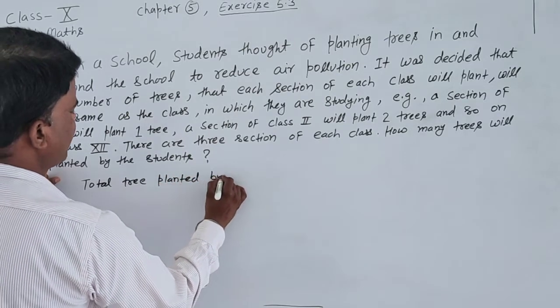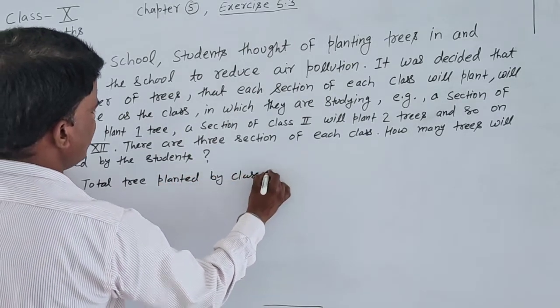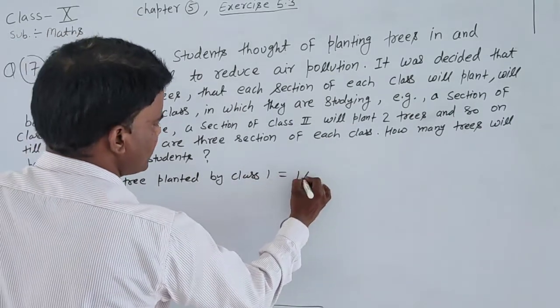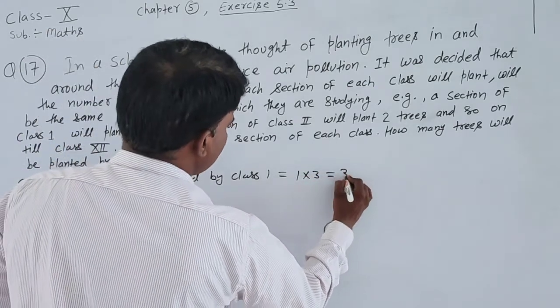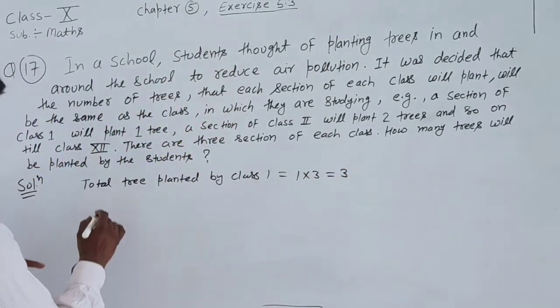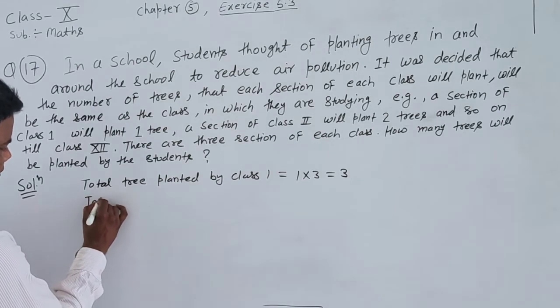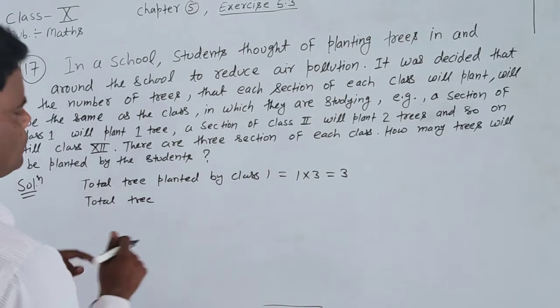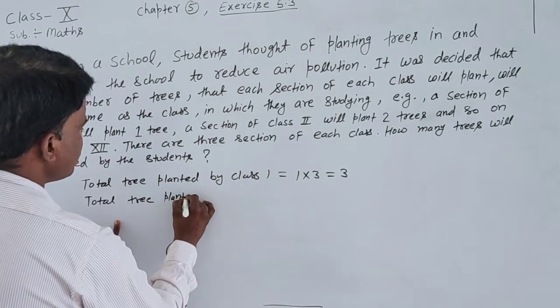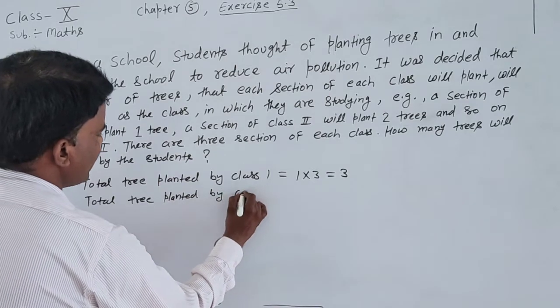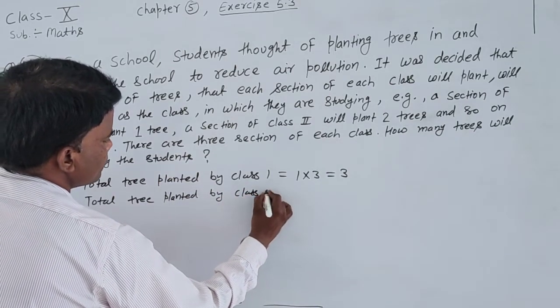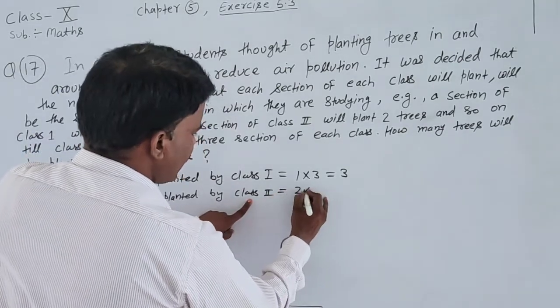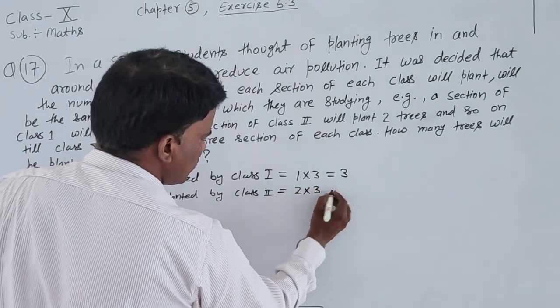Total trees planted by class 1: 3 sections times 1 equals 3. Total trees planted by class 2: 3 times 2 equals 6.